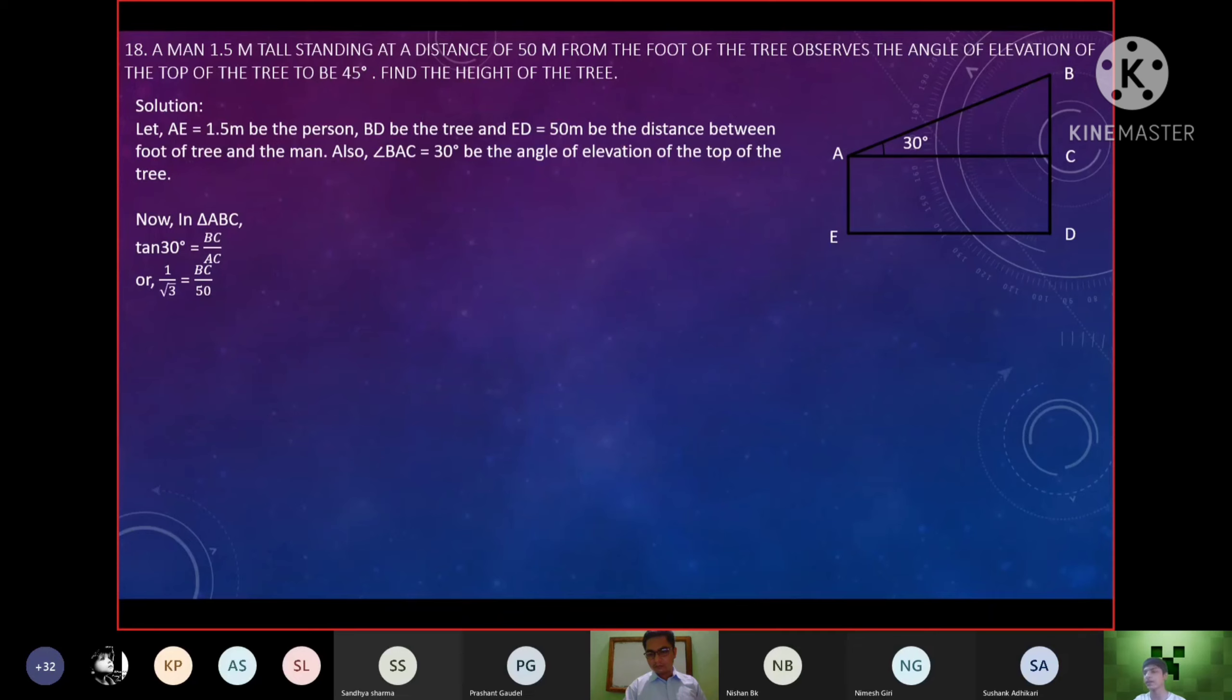The value of AC is 50. I mean the value is 28.868 meters and there's BD. BD is BC plus CD. BC value and CD is equal to 28.868 plus 1.5 meters.